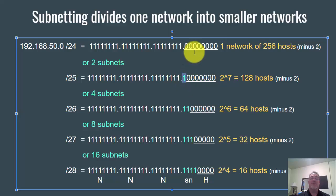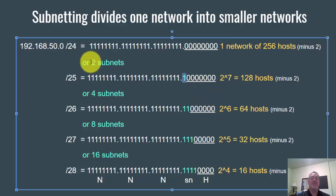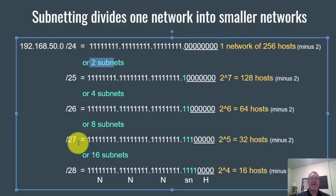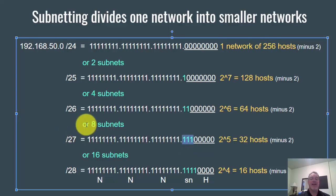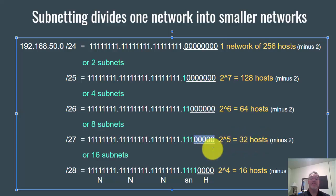For two subnets, I changed one zero to a one — I borrowed one bit, added one one, giving two to the first power equals two subnets. Notice with /27, I've got 27 ones. I added three ones, and two to the third power is eight — giving eight subnets. Also, my zeros: I've got five zeros, and two to the fifth power is 32 hosts. You can see how important the subnet mask is to defining these subnets.